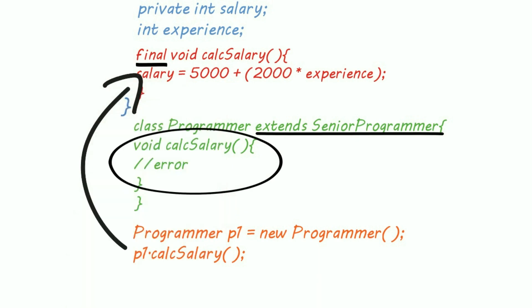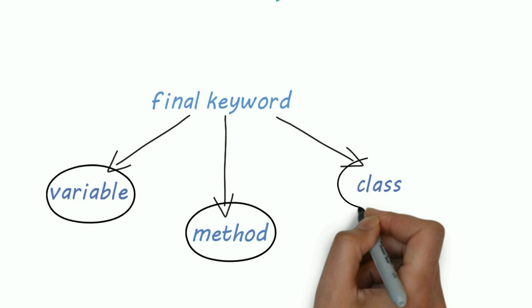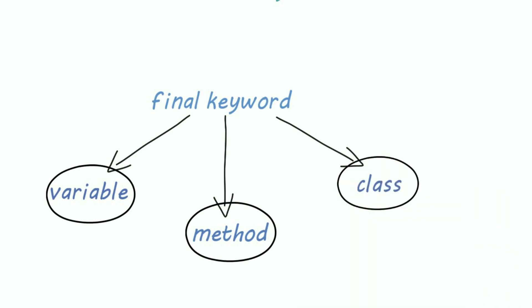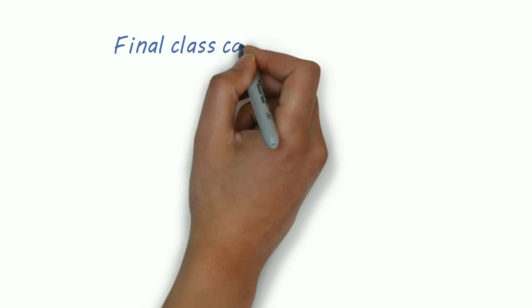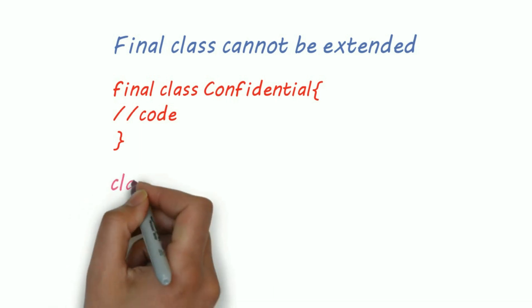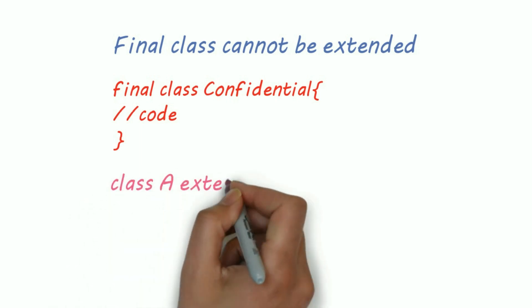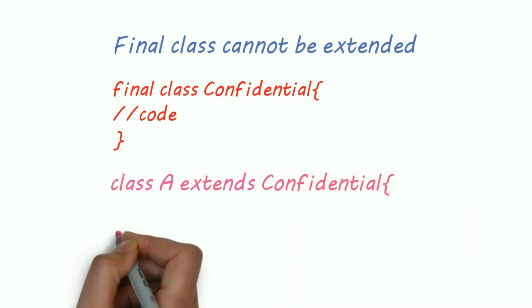Now let's see what a final class is. A final class cannot be extended, meaning you cannot inherit that class. Here I have declared a Confidential class as final, so if someone extends the Confidential class, then they'll get a compilation error.